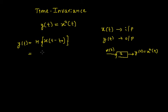Similarly, if I feed x of t minus t naught, I have to get x square of t minus t naught in the first half.